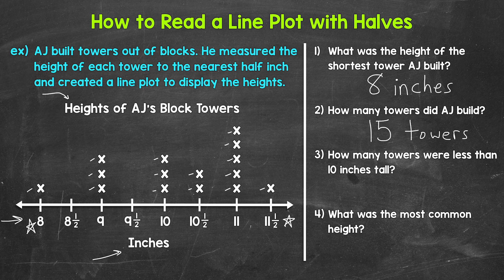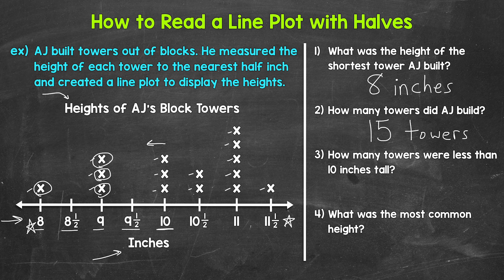Moving on to number three: how many towers were less than 10 inches tall? Let's start by finding 10 inches — right here. We need all of the towers to the left of 10 inches on the number line. So we're looking at eight inches, eight and a half inches, nine inches, nine inches, and nine and a half inches. Counting those: one, two, three, four. So how many towers were less than 10 inches tall? Four towers.